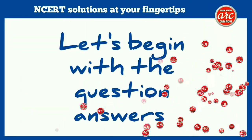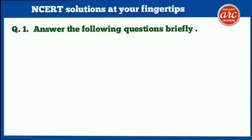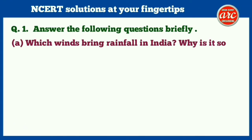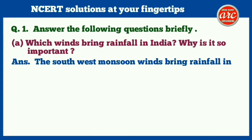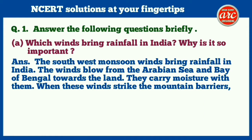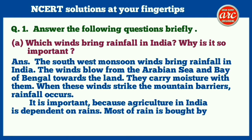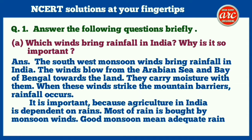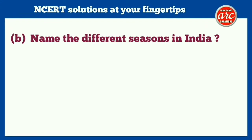Question number one — answer the following questions briefly. (a) Which winds bring rainfall in India? Why is it so important? Answer: The southwest monsoon winds bring rainfall in India. The winds blow from the Arabian Sea and Bay of Bengal towards the land, carrying moisture with them. When these winds strike the mountain barriers, rainfall occurs. It is important because agriculture in India is dependent on rains, and most rain is brought by monsoon winds — good monsoon means adequate rain and bountiful crops.